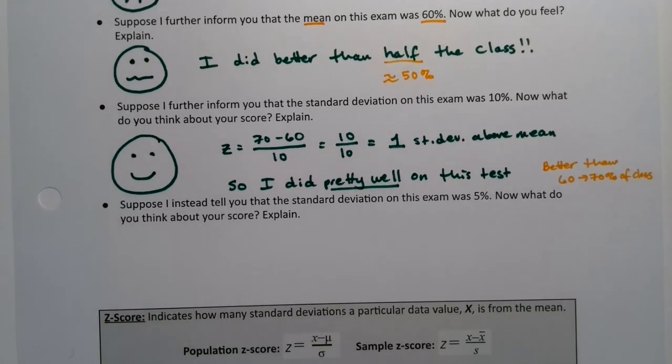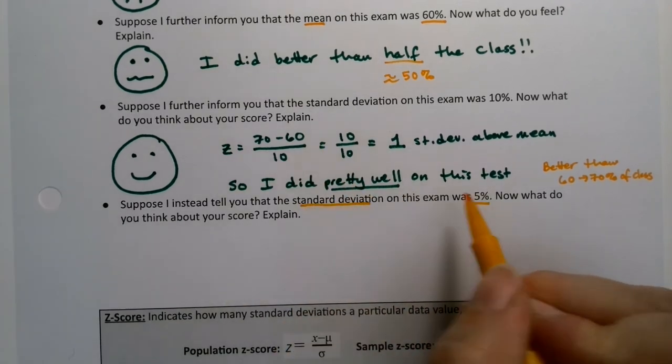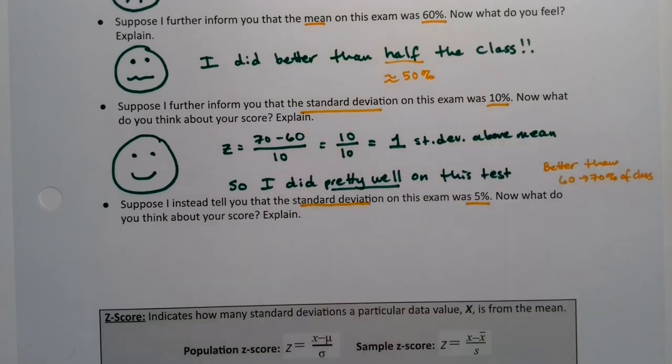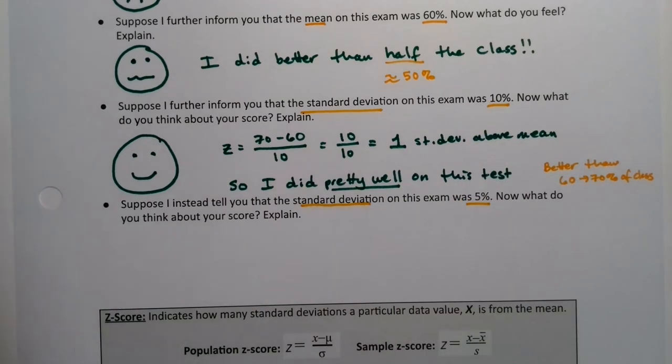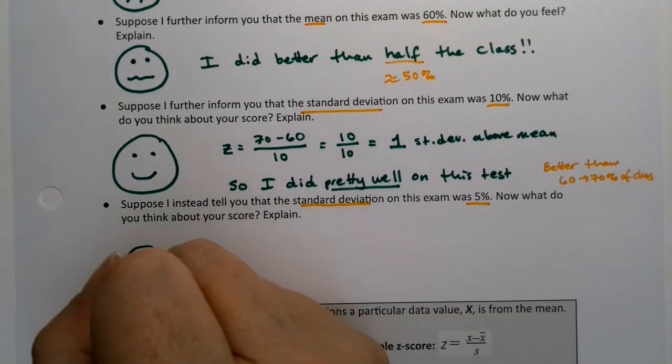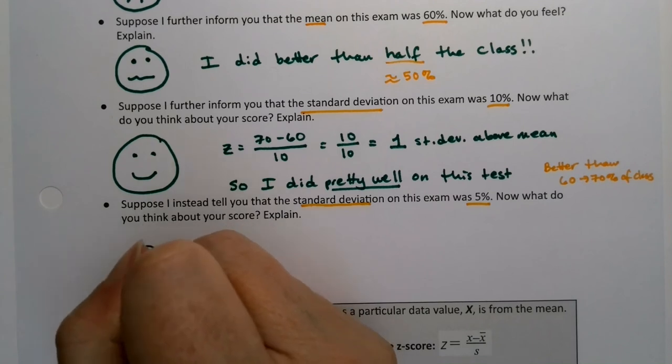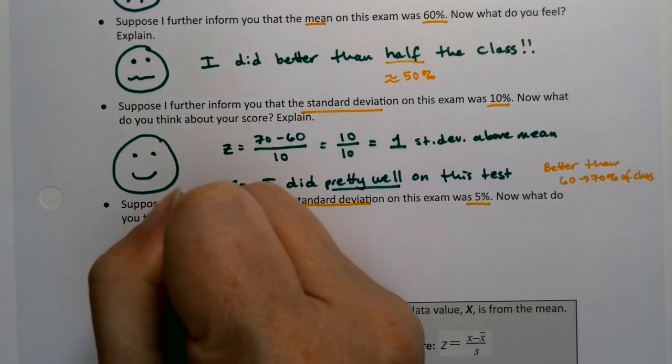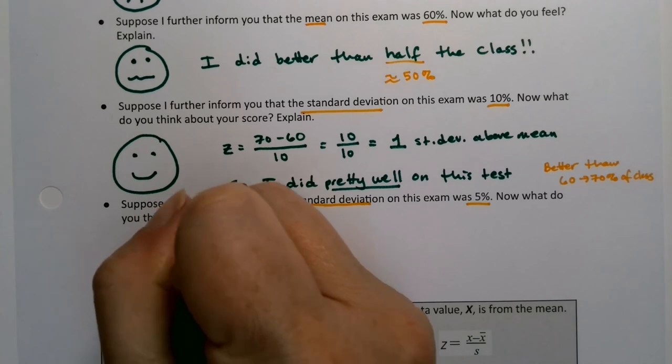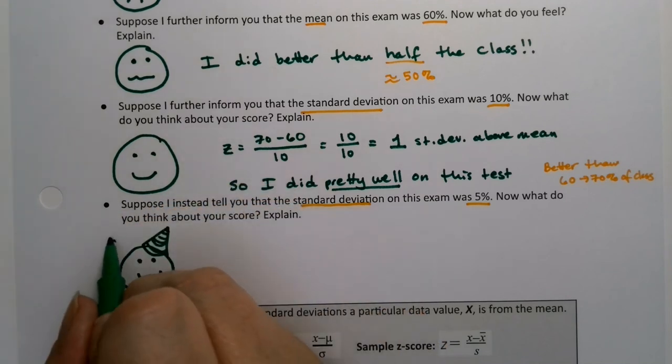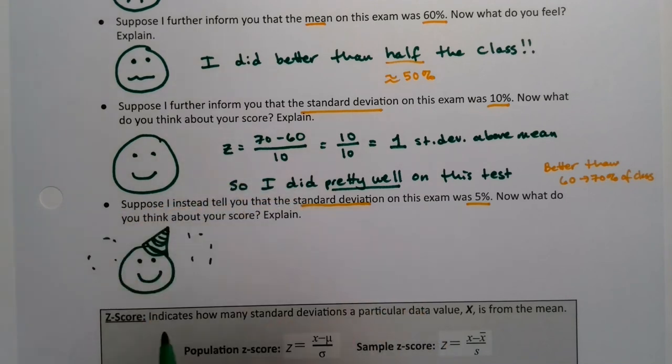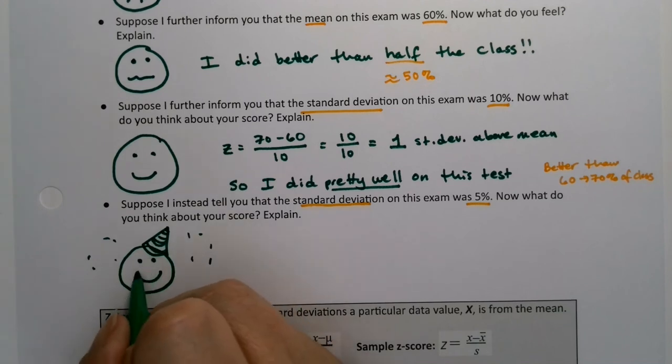But then suppose the instructor's like, nope, nope, nope. Sorry. My fault. My fault. The standard deviation was not 10. It was five. So the standard deviation was five instead of the standard deviation 10, like before. Well, now you're going to have a little party hat. You're going to have a big smile on your face. Woo. I'm going to give you a little party hat. Right? Yay. Confetti's all around you. Woo. Right? You have a big grin on your face.